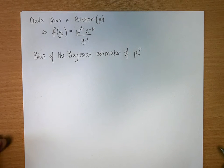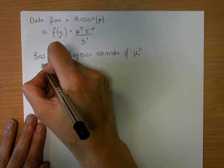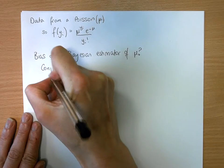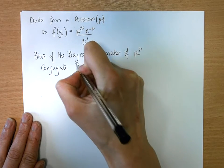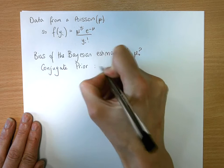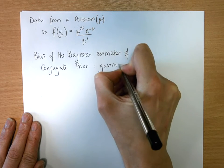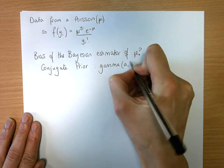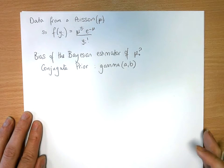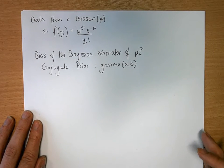So the first thing we want to think about is the bias of the Bayesian estimator. Before we create a Bayesian estimator, we need to think about what our conjugate prior is. So if we use a conjugate prior here, and we say it is a gamma distribution with parameters a and b. We can leave a and b unspecified at the moment, they're generic.